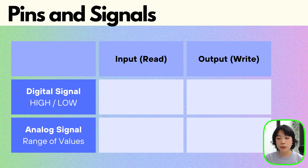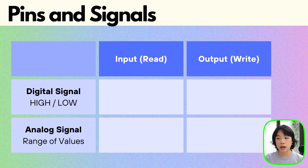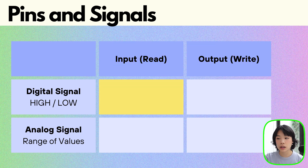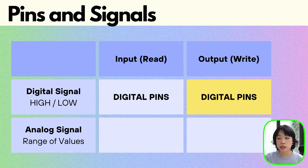On the rows we have the type of signals, and on the columns we have the direction of the data flow. In the first box, where we read digital signals, we can use digital pins as expected. And in the second box, where we write or send a digital signal, we can also use digital pins — and this is exactly what we're going to be using to send data to turn on and off an LED.